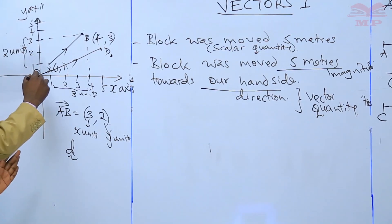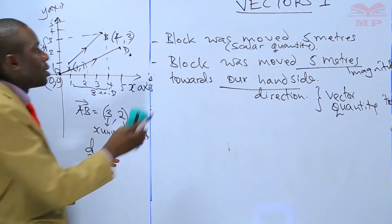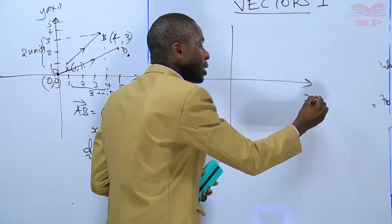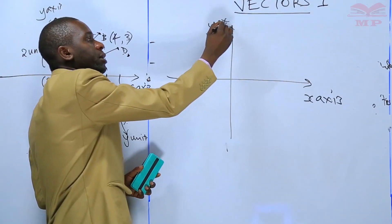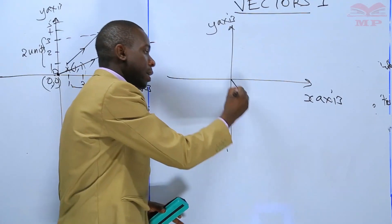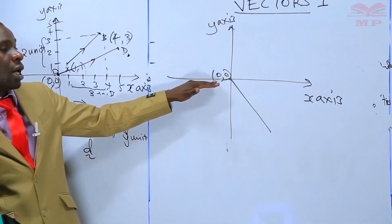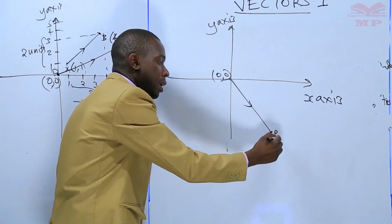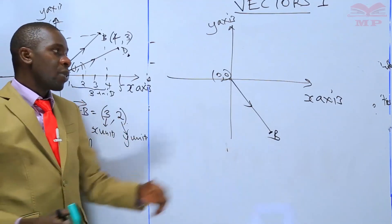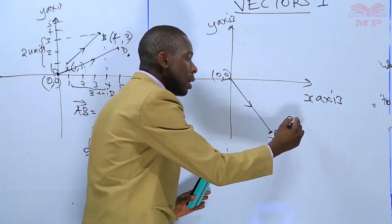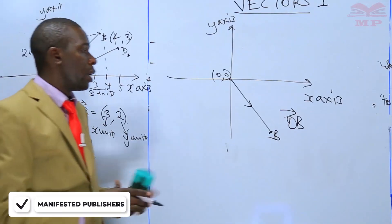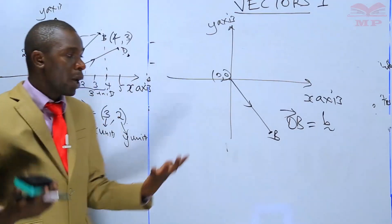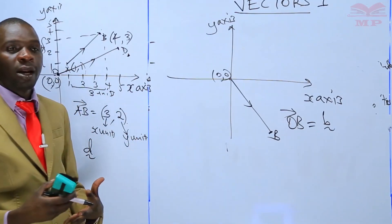In another example on a Cartesian plane, if you have a vector going from the origin (0, 0) towards point B — that is a position vector moving from O towards B. Instead of writing vector OB, which is still correct, we can simply write it as vector b, with a small wavy line just below the small letter b. That is how we represent vectors.